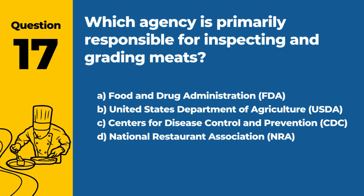Question 17: Which agency is primarily responsible for inspecting and grading meats? A. Food and Drug Administration (FDA). B. United States Department of Agriculture (USDA). C. Centers for Disease Control and Prevention (CDC). D. National Restaurant Association (NRA). Answer: B. United States Department of Agriculture (USDA). The USDA is primarily responsible for inspecting and grading meats in the United States.